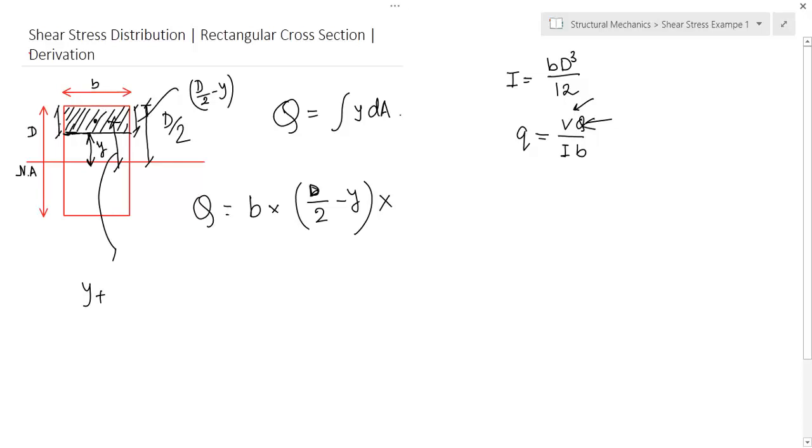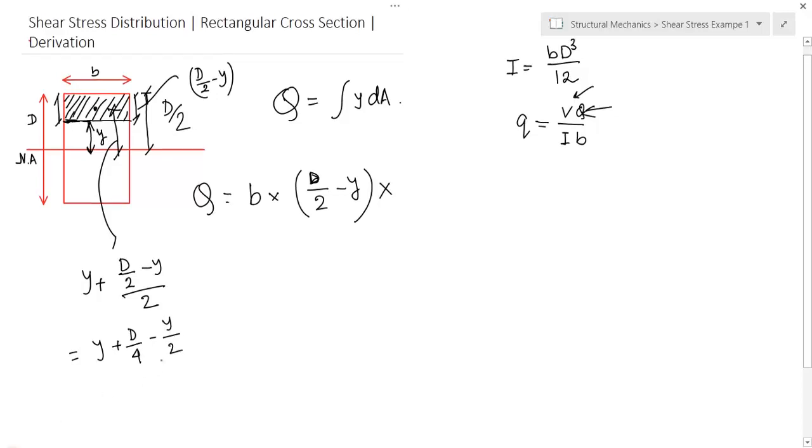It is y plus half of this distance. y plus half of this distance. So, the distance is d by 2 minus y by 2. So, y plus d by 4 minus y by 2. So, you get d by 4 plus y by 2. It is the CG distance.